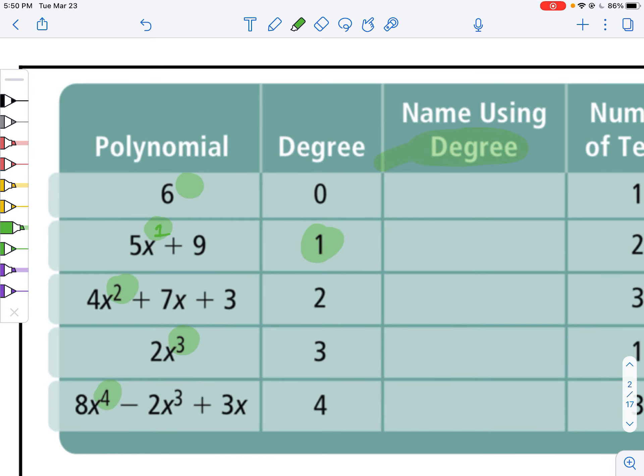If a polynomial has degree zero, we call it constant. This is because if you were to graph y equals six, it would just be y equals six. It would look like that, like on your graph. If you graphed y equals 5x plus 9, that would take the shape of a line. So we call this guy linear.